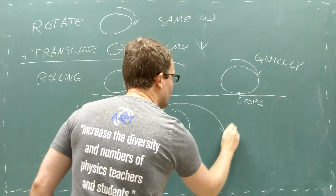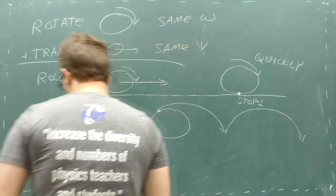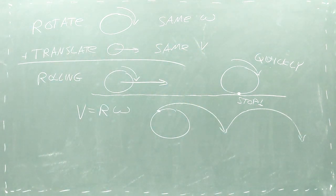We can study this rolling motion by keeping track of a single point on the wheel and watching how it moves as the wheel rolls forward.